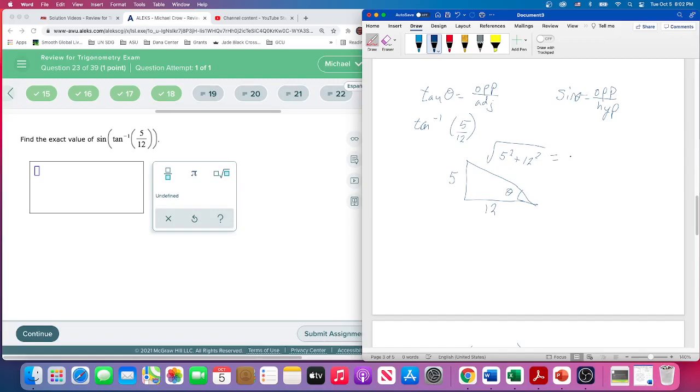So this gives us 25 plus 144. Is that going to be 169? In fact it is, which is the square root of 13.